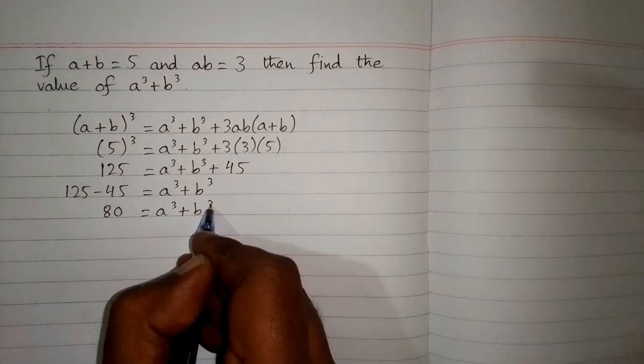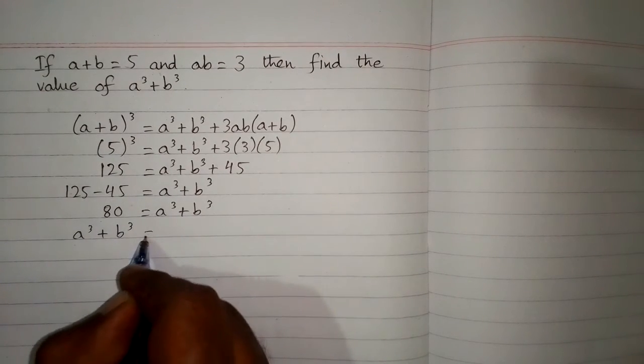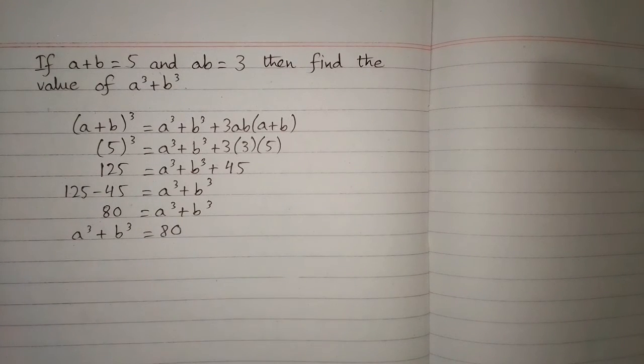So 80 is equal to a cube plus b cube, or we can write it as a cube plus b cube is equal to 80. So the value of a cube plus b cube is 80.